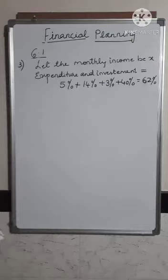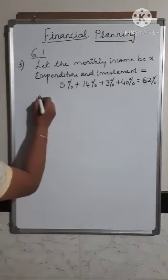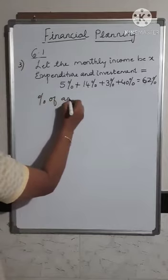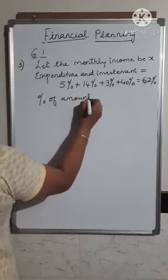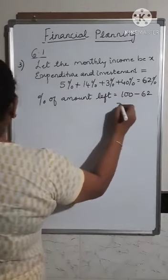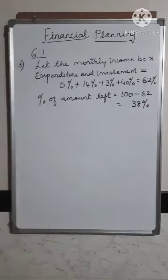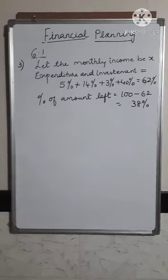So if 62% is his expenditure and investment, we need to find what is his savings — that is, the amount left with Nikhil after all his expenditure and investment. They have told that he is left with 19,000 rupees.